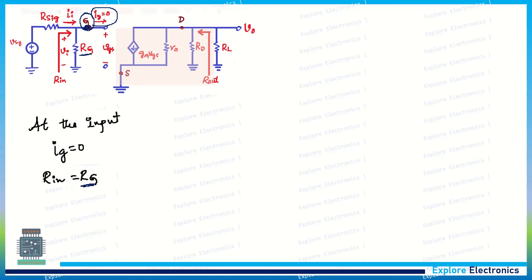The voltage gain AV = V0 / VI = −gm × (R0 ∥ RD ∥ RL). The open circuit gain, neglecting RL, is AV0 = −gm × (R0 ∥ RD). For the overall gain considering R_signal, we cannot neglect it, so the overall gain GV is expressed considering the full signal path.